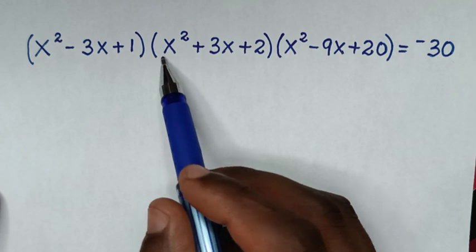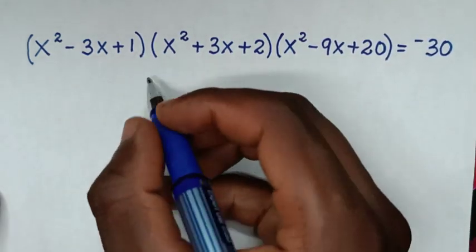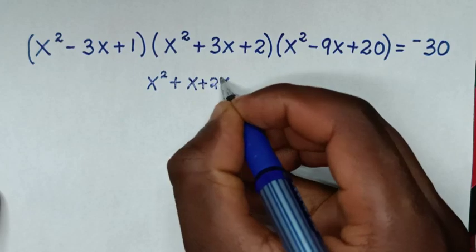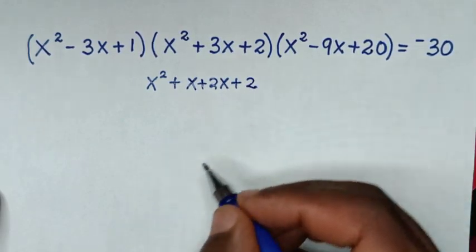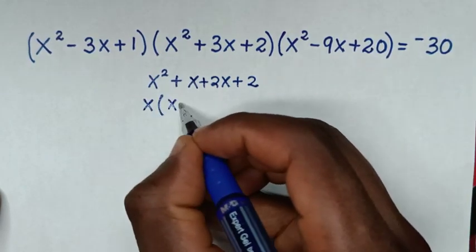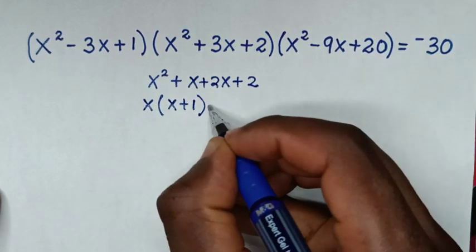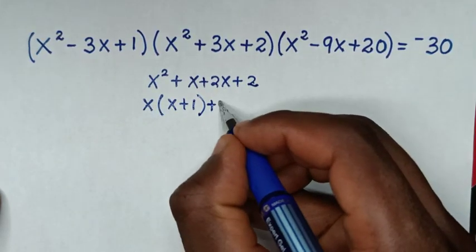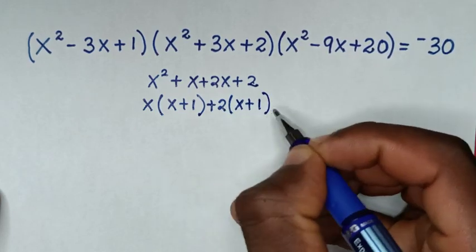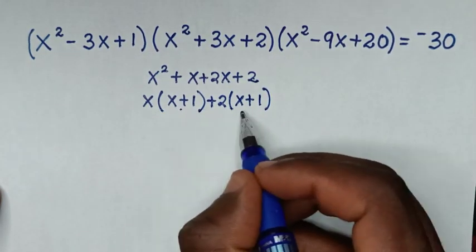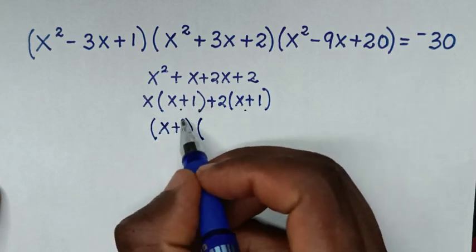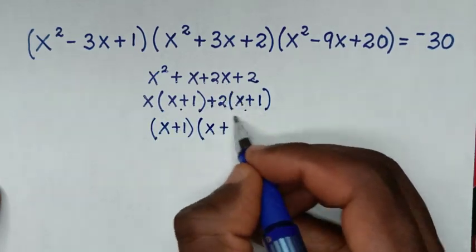For the second quadratic equation, x²+3x+2 can be factorized. We split 3x as x+2x, take x out of the first bracket to get x(x+1), and take 2 out to get 2(x+1). Since (x+1) is common, we get (x+1)(x+2).